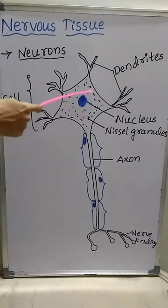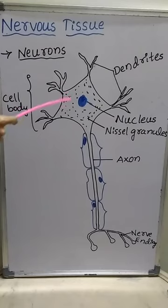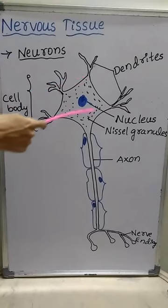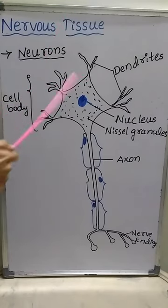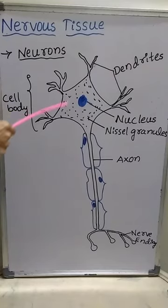The cell body is the polygonal, broader, and nucleated part of the neuron — the nucleus is present only in the cell body. The cell body contains all types of cellular structures except centriole. Centriole is absent in the cell body.